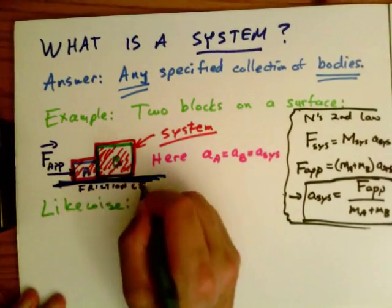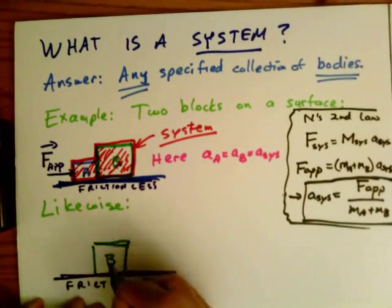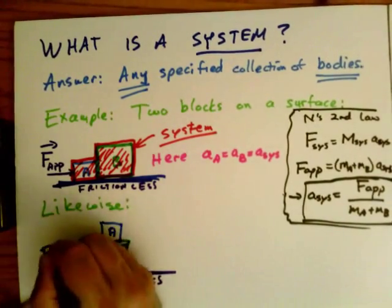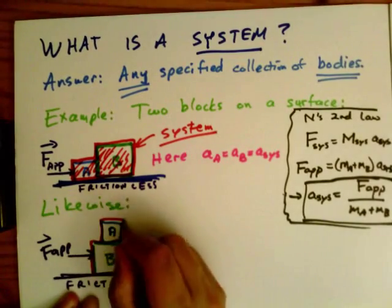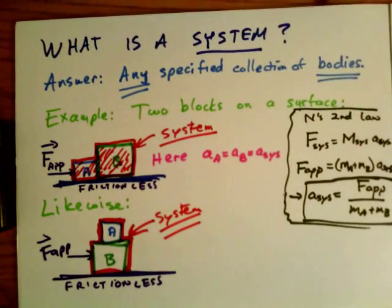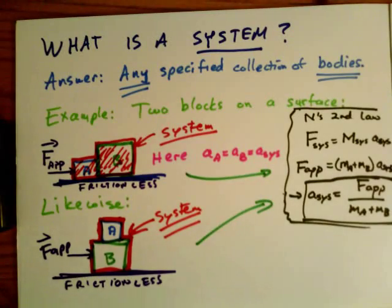Likewise we have a situation where we have a frictionless surface. We can imagine block B and then block A stacked on top of it with friction between the two blocks, and then some applied force. So again the two blocks together could be considered a system. In this case you have exactly the same algebra for calculating the acceleration of the system.